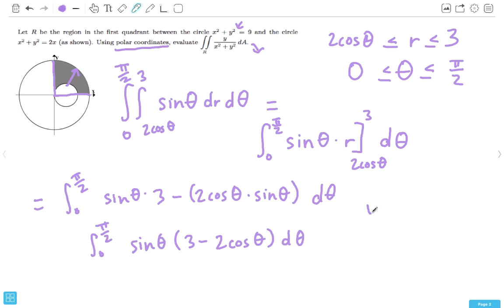So, now we can just do u substitution. So, u is equal to 3 minus 2 cosine theta. We take the derivative of that. Cosine theta is sine theta, or negative sine theta. So, this just ends up being 2 sine theta d theta. And, then since we only have a sine theta over here, we're going to have to divide our du by 2 to get sine theta d theta.